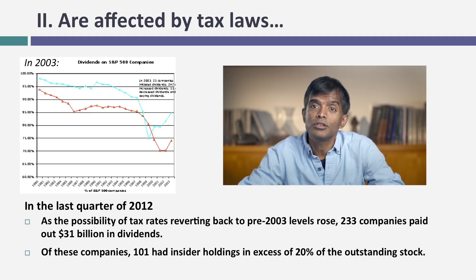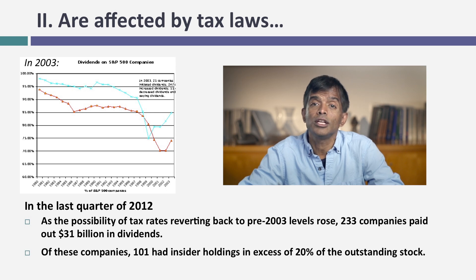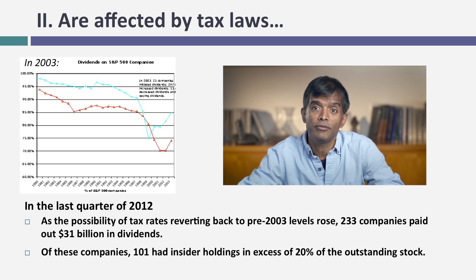That 2003 tax law was designed to sunset on December 31st, 2012. On January 1st, 2013, tax rates could very well have gone back to what they were in 2002. Leading into December 2012, there was a lot of talk about the fiscal cliff — the potential that tax laws could go back to pre-2003 levels. Not surprisingly, a lot of companies paid special dividends in the last quarter of 2012, leading up to an expected tax law change. So if tax laws change, don't be surprised to see dividend policies change to reflect them.